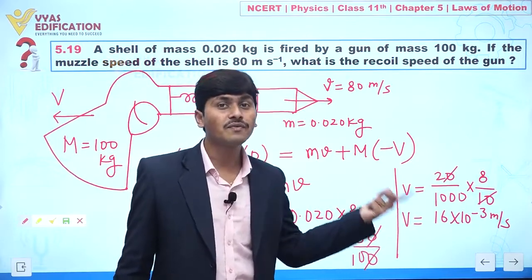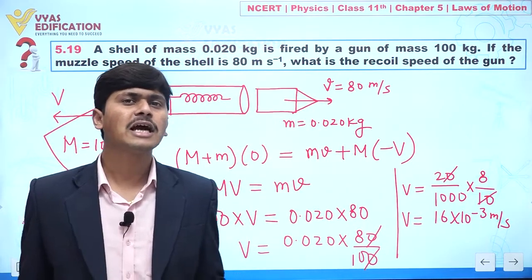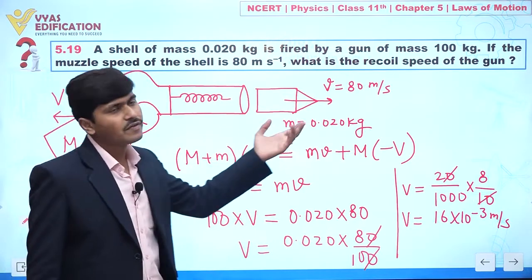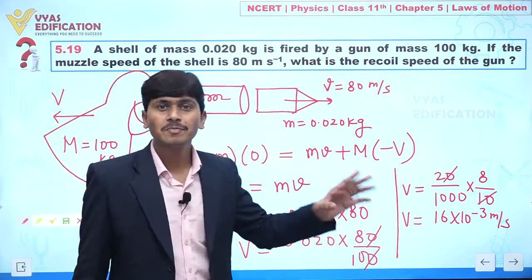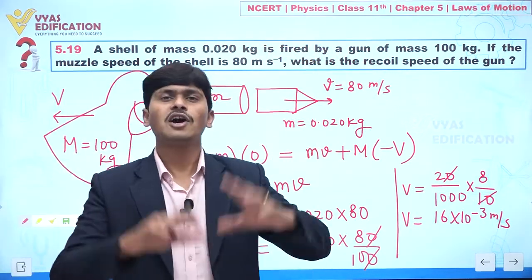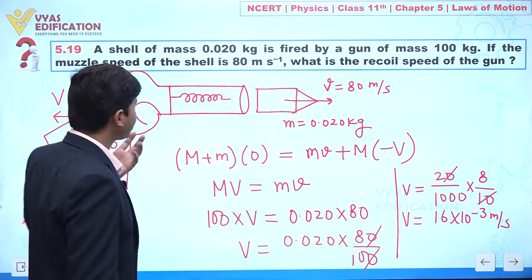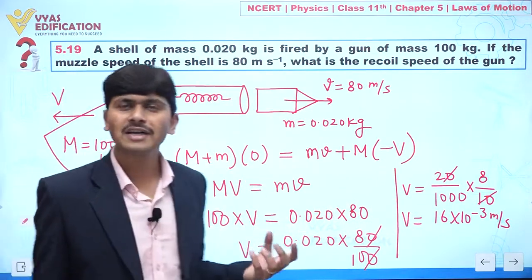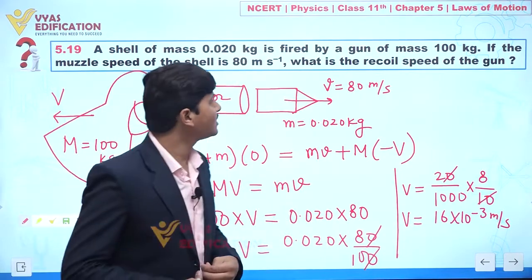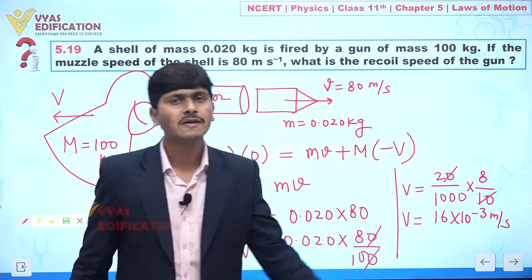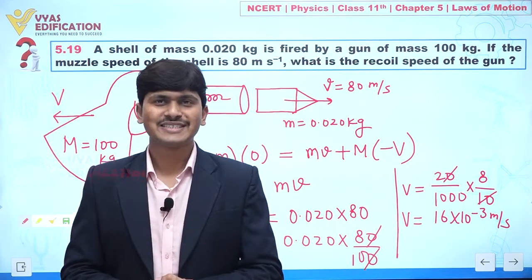This is a very small recoil velocity. This happens because the shell has a very small mass so its velocity is very high, but the gun has a very large mass, so the velocity imparted to it is very small. This is the recoil speed of the gun.